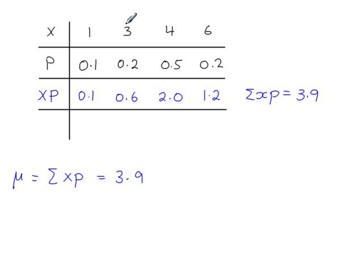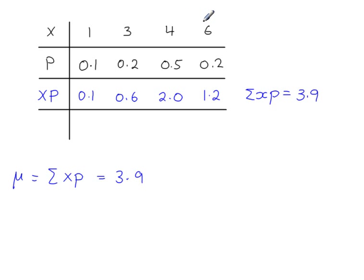To just verify that value, if these are the values that x can take, then the mean should be between 1 and 6, which it is. It's just a crude check at this stage. And if you had worked out a mean value of 7.2, there's no way that 7.2 lies in between the 1 and the 6, so you would know that's wrong.